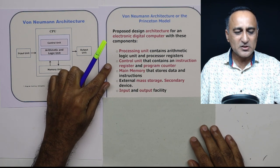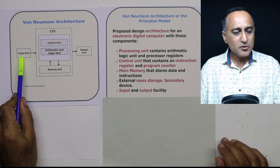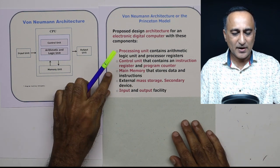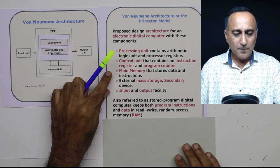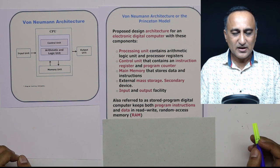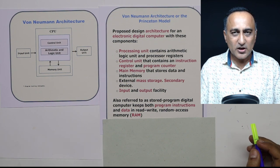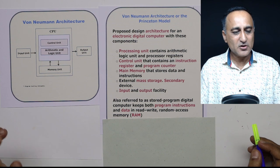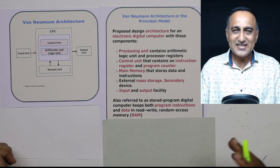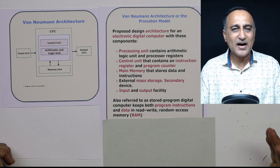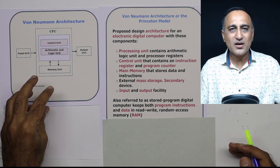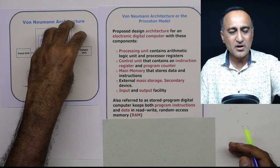Finally, he spoke about giving input through input devices and getting output from output devices. The most important part about this von Neumann architecture is that it is a very historically important design because it forms the basis for most modern computers. There is another architecture called the Harvard architecture — if you are interested, go and take a look at it. The PCs we are going to work with are mostly going to be based on the von Neumann architecture.